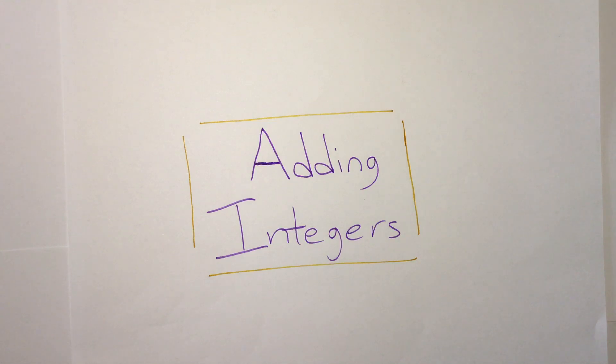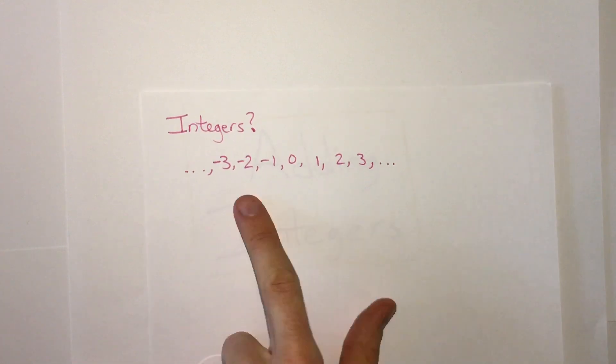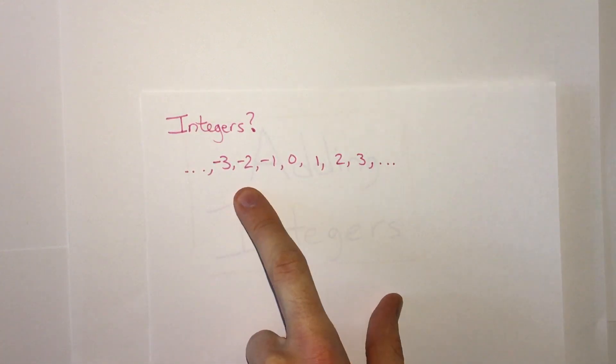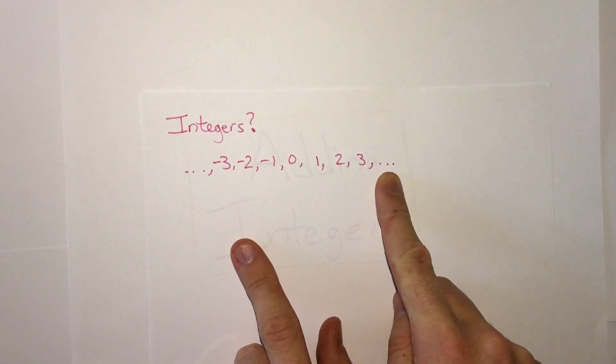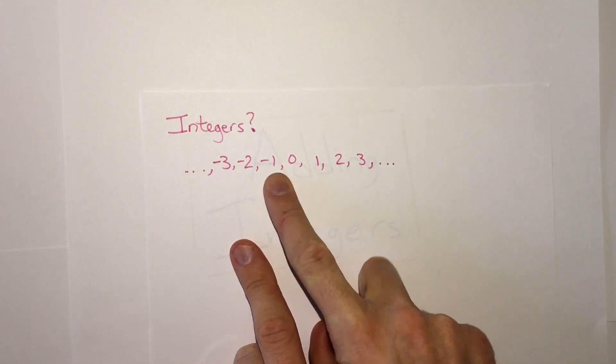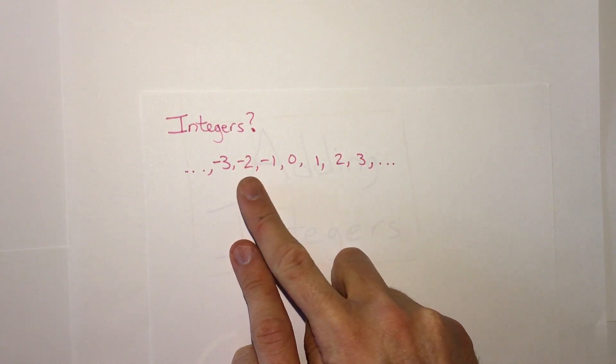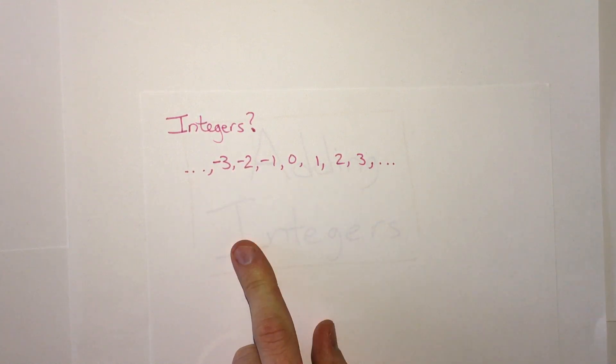In this unit we're going to be looking at integers and specifically adding integers. But first, what are integers? Integers are any number that we can count that is positive or negative. So that includes all whole numbers, zero, and then all negative numbers that don't have a decimal: negative 1, negative 2, negative 3, and so on.